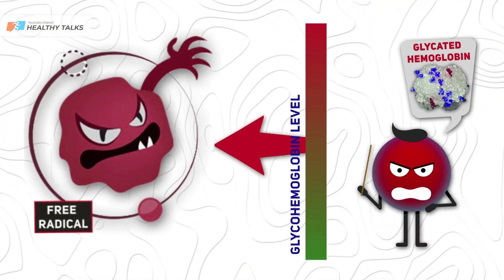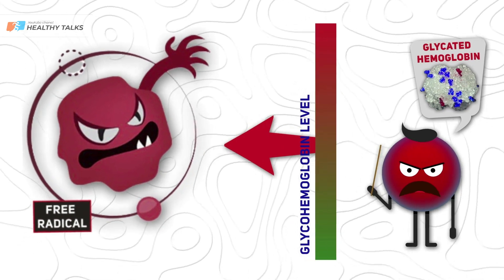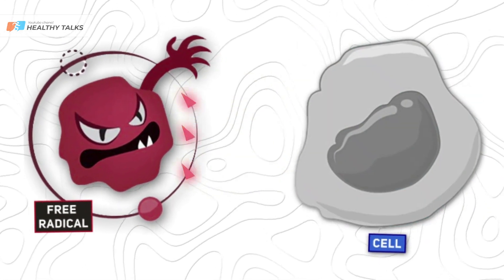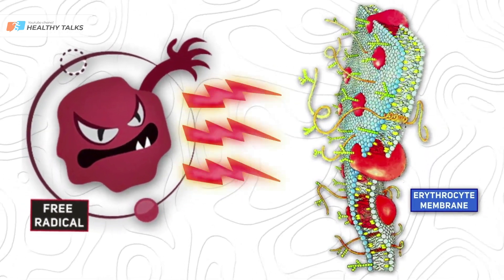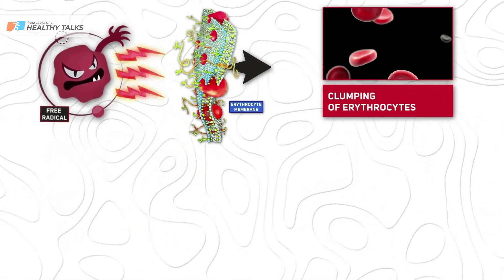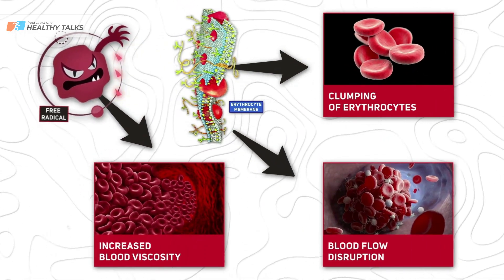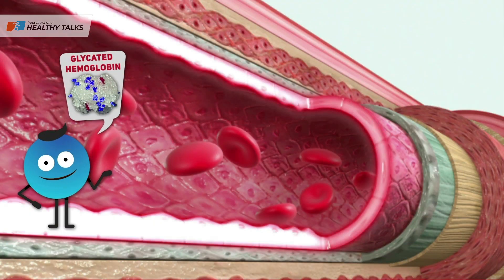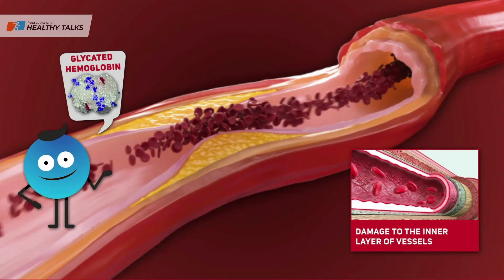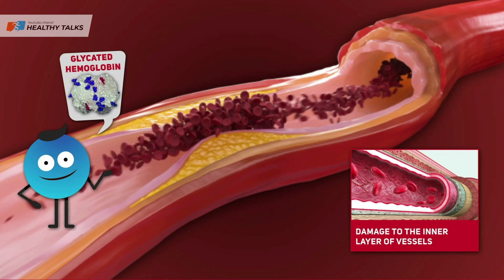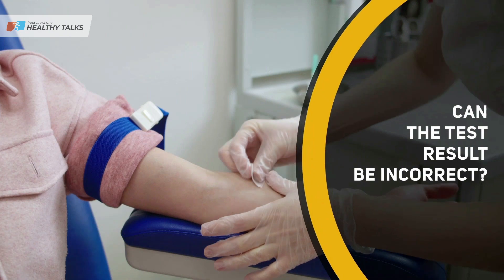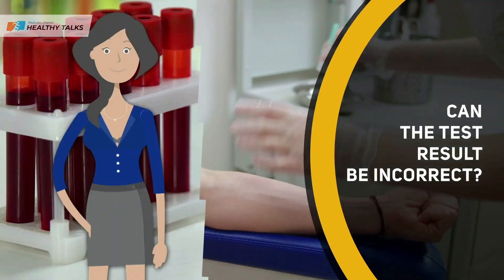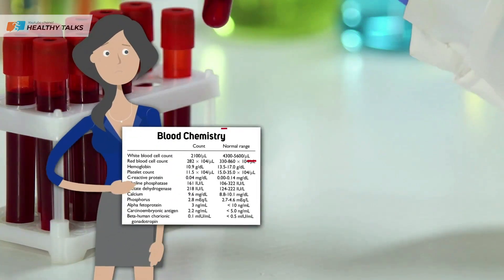Elevated glycohemoglobin levels lead to the formation of free radicals — chemically active molecules that damage our cells. First of all, they damage the membranes of red blood cells, which causes them to stick together, increase blood viscosity, and impair blood flow. In addition, glycated hemoglobin causes inflammation and damage to the inner layer of blood vessels, so that they actively form atherosclerotic plaques that lead to cardiovascular disease.